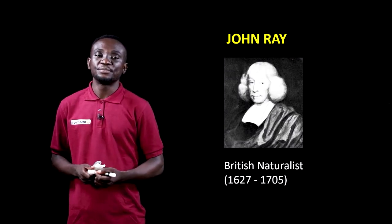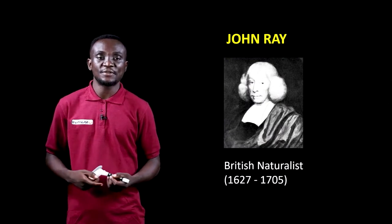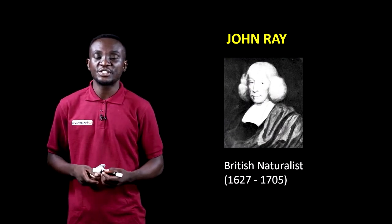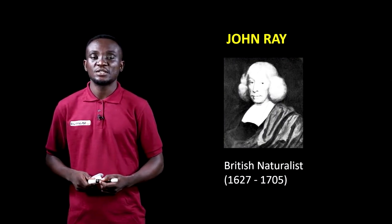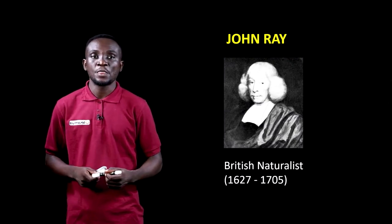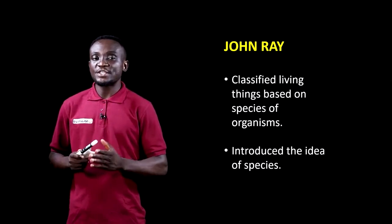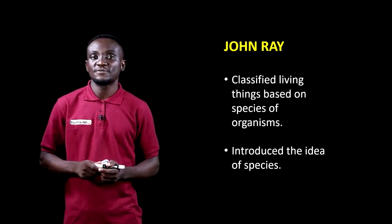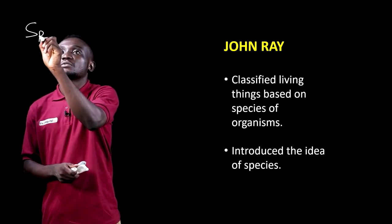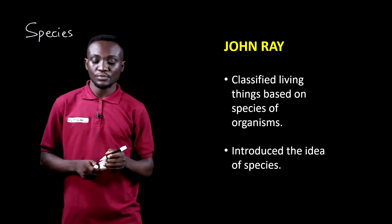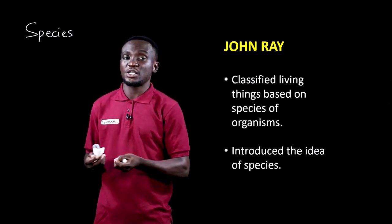Now this is John Ray, one of the three main taxonomists who played key roles in classifying living organisms. He's a British naturalist who lived between the years 1627 and 1705. He was credited with classifying living organisms based on their species. So he introduced the concept of species, and at a point his form of classification was referred to as species classification.